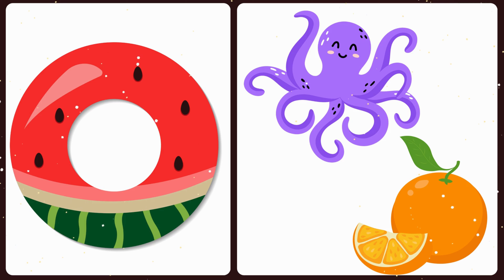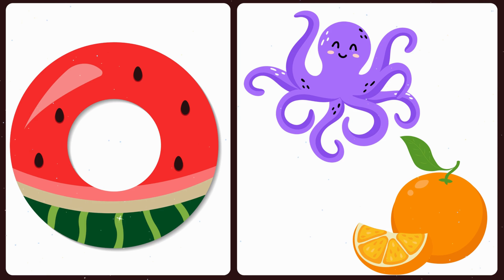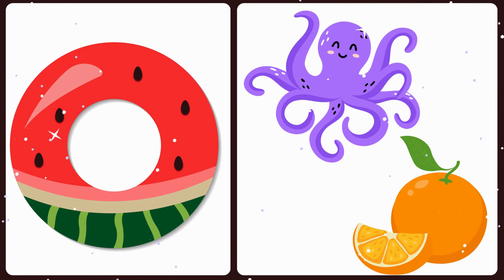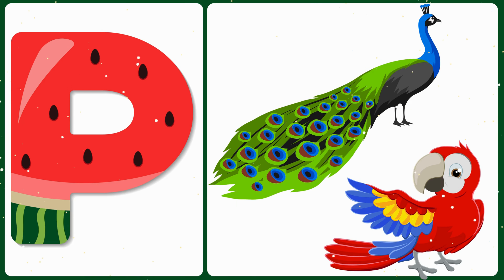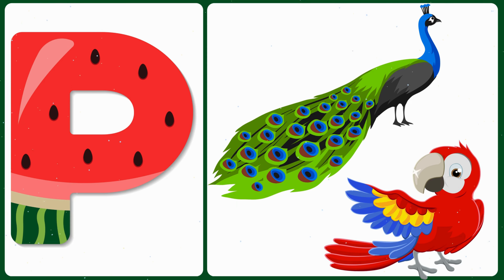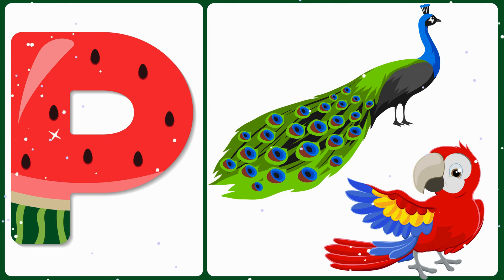O — O is for octopus, O is for orange. P — P is for peacock, P is for parrot.